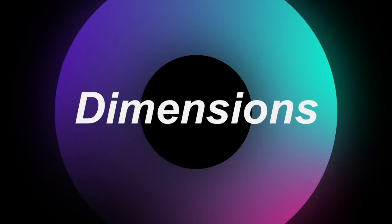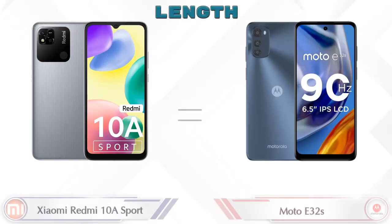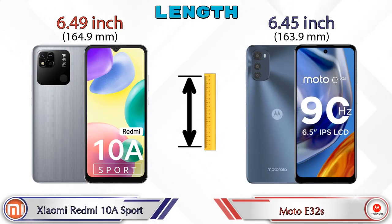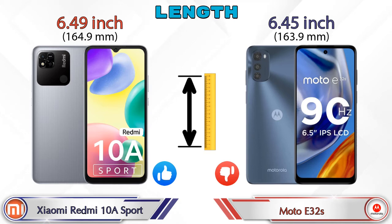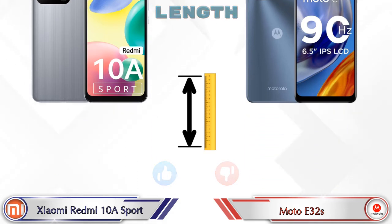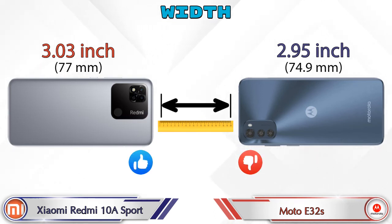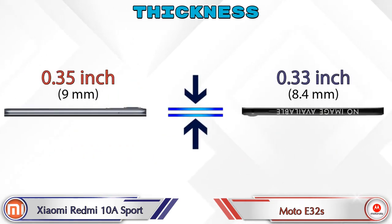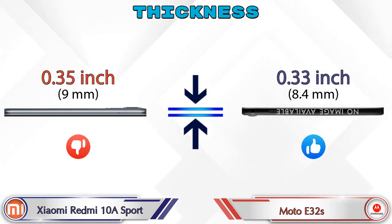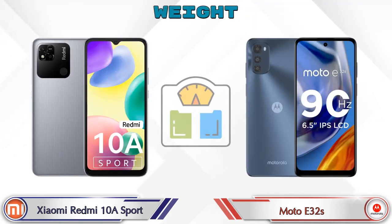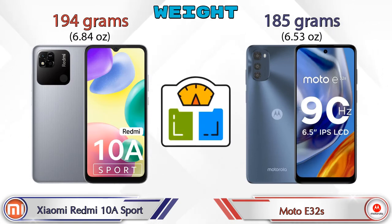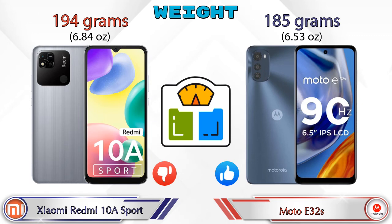Now let's check the detail about dimensions. Talking about the length of both phones, the Redmi 10A Sport is 6.49 inches and the E32s is 6.45 inches, which is less than the Redmi 10A Sport. Width: the Redmi 10A Sport is 3.03 inches and the E32s is 2.95 inches. Thickness: the Redmi 10A Sport is 0.35 inches and the E32s is 0.33 inches. Weight: the Redmi 10A Sport is 194 grams and the E32s is 185 grams.